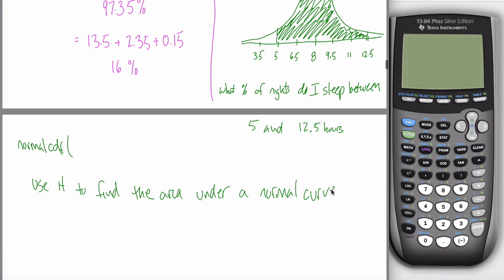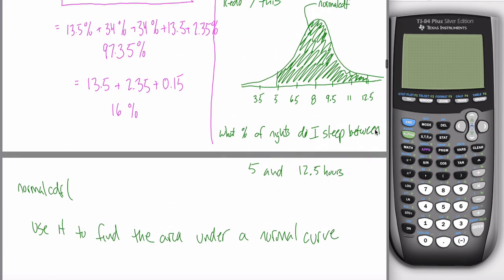The question doesn't literally say 'how much area is there under the curve between five and twelve and a half,' but you recognize that's what it's asking. When you need to find the area underneath the curve, use the normal CDF function. The normal CDF function takes four inputs: lower bound, upper bound, center, and spread.